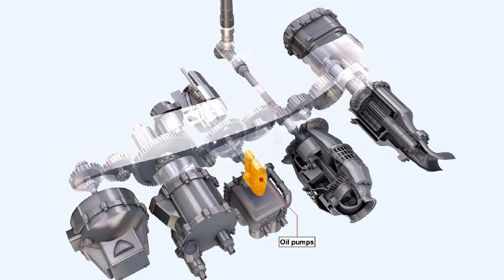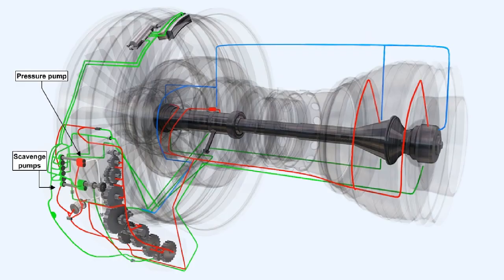The oil pumps, both pressure and scavenge, are fitted on the accessory housing within an oil pump pack which consists normally of one pressure pump and perhaps as many as seven scavenge pumps. Having several scavenge pumps ensures that the lubrication system remains a dry sump system.